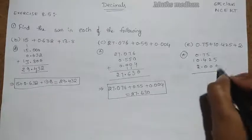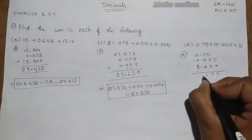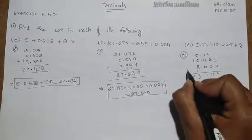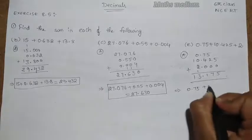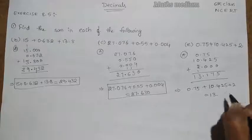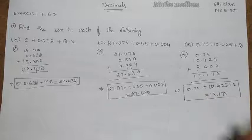So now 5, 5 plus 2 is 7, 7 plus 4 is 11. Here is the carry and 2 plus 1 is 3. This is the 1. Here we get 0.75 plus 10.425 plus 2 is equal to 13.175 as the answer for this given question.